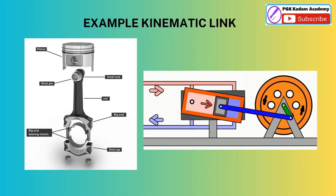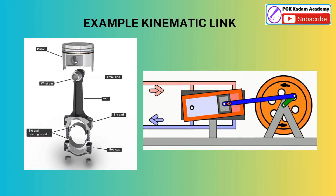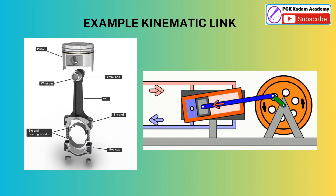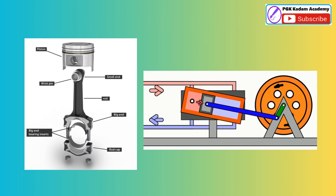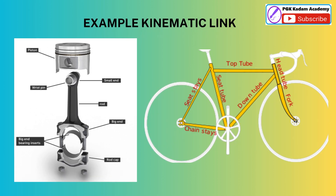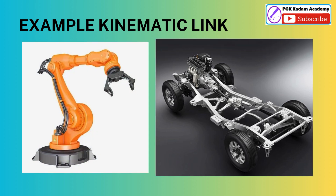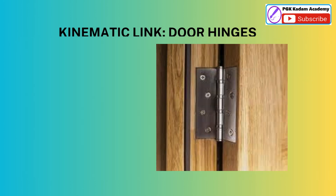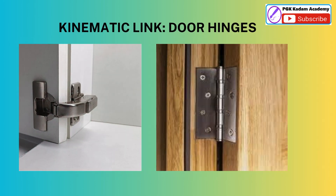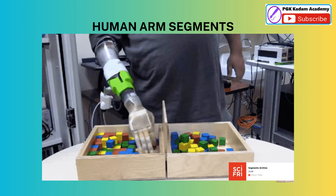Examples of Kinematic Links include: crank, piston, cylinder frame in a slider crank mechanism, frame of a bicycle, robot arm segments, car chassis, door hinge, and human arm segments.